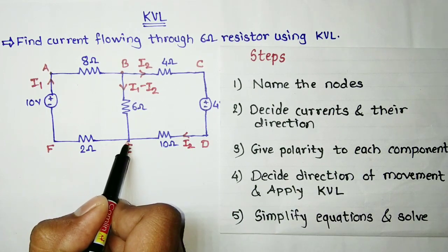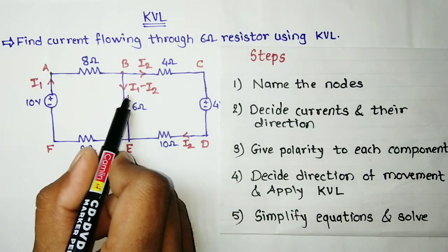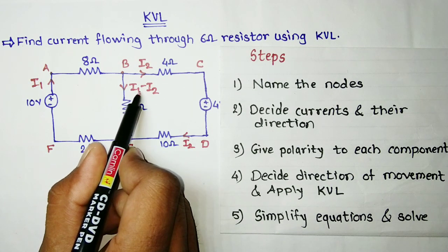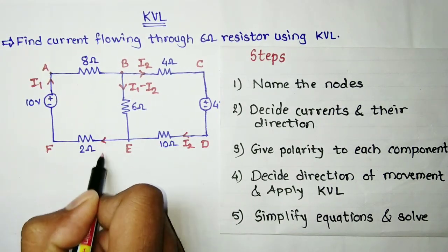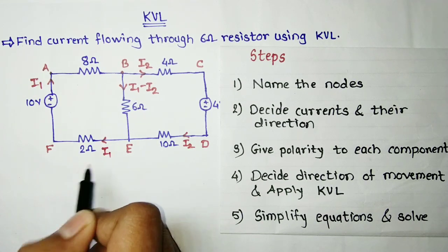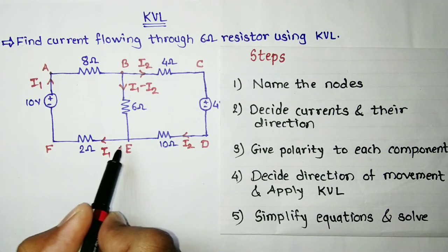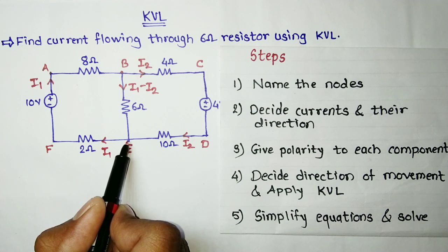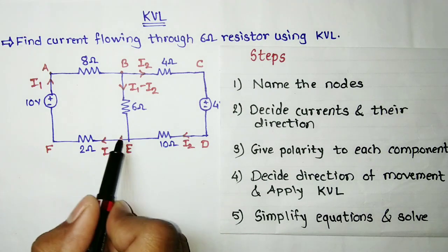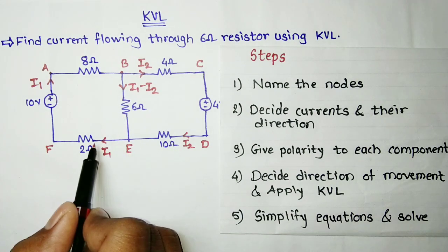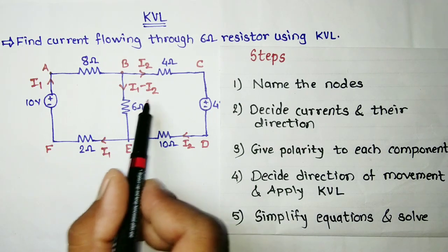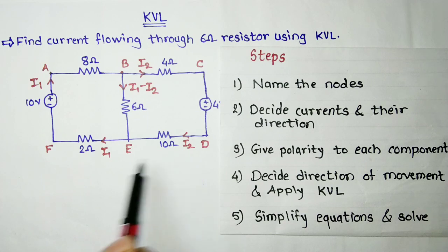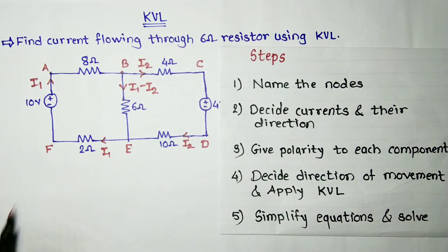Here at point E, these two currents will get added: I1 minus I2 plus I2 gives us I1. As per KCL — Kirchhoff's Current Law — the sum of incoming current is equal to the sum of outgoing current, and therefore I1 equals I1 minus I2 plus I2.